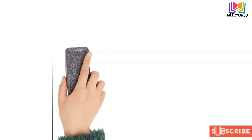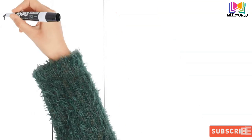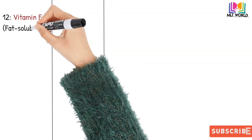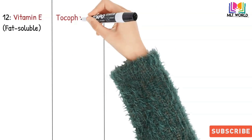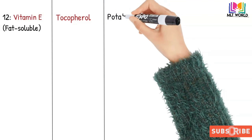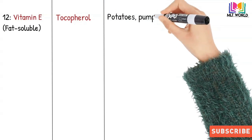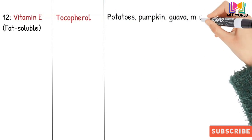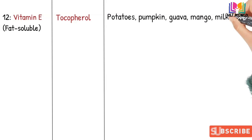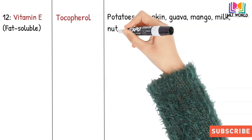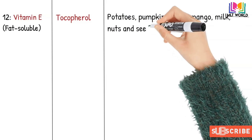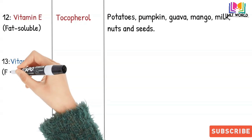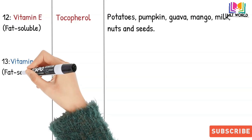Next is Vitamin E, which is a fat-soluble vitamin. Its scientific name is tocopherol. Vitamin E is also a very rich antioxidant. Sources include potato, pumpkin, guava, mango, and various nuts and seeds.